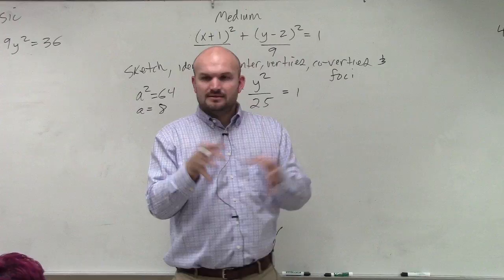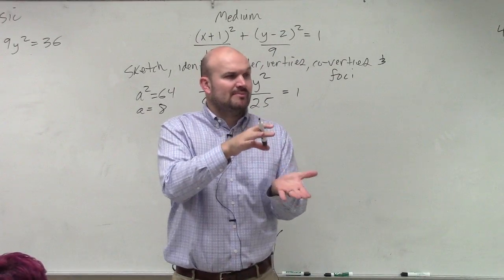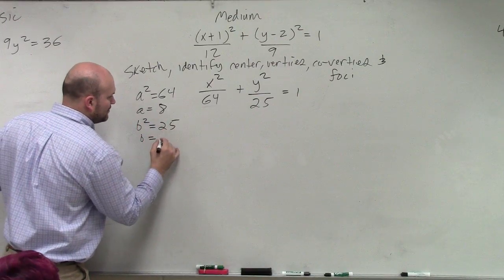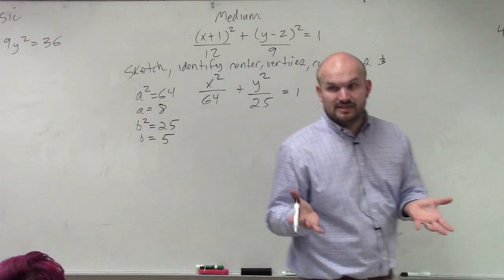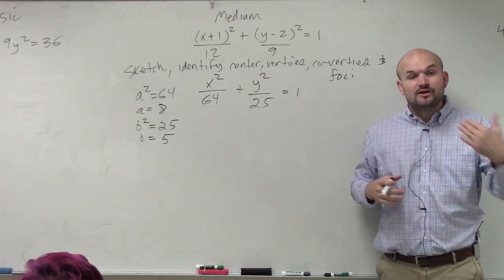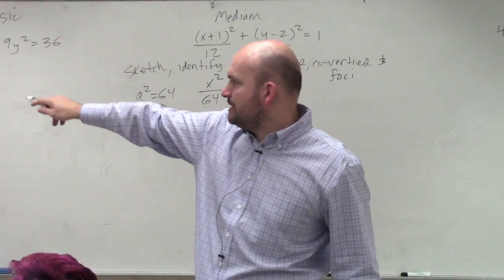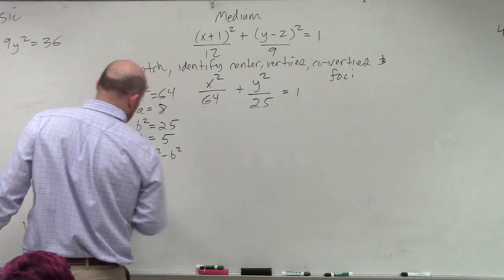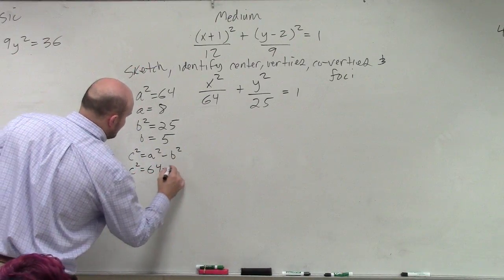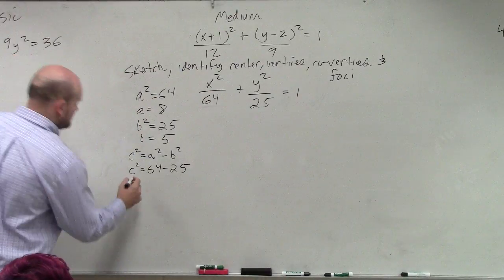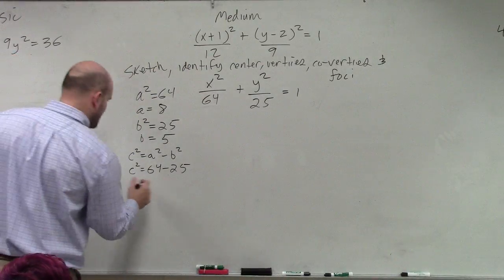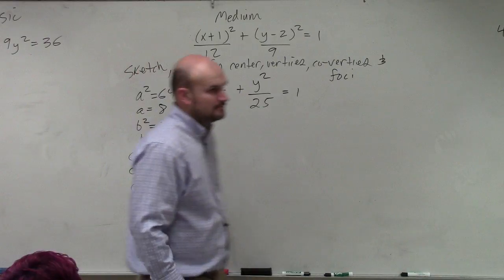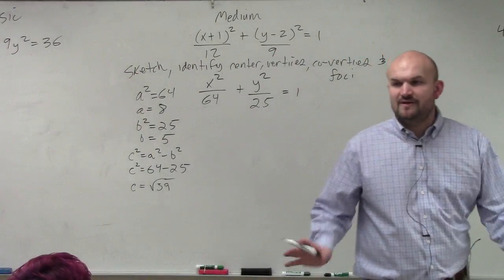We're talking about distance, not direction at this point in time, so we don't need to include plus or minus. B squared then has to be 25. So therefore, B is equal to 5. Is everybody following me so far with this? And then the third type was C. There's a formula up there. C squared equals A squared minus B squared. So C squared equals 64 minus 25. So therefore, C is equal to square root of 39.